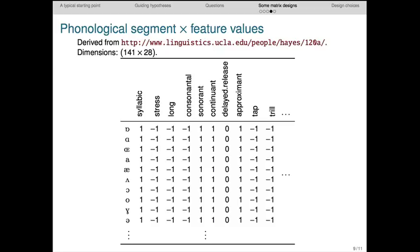This matrix has phonological segments labeling its rows. The symbols come from the International Phonetic Alphabet. It happens that all the symbols you can see here are vowels. So for example, this one is like the ah in cat, and this is like the ah in dog or bought.